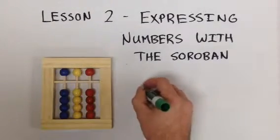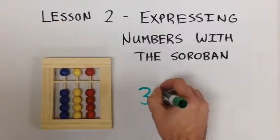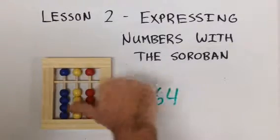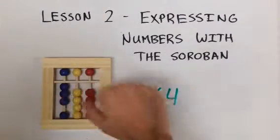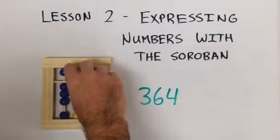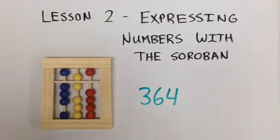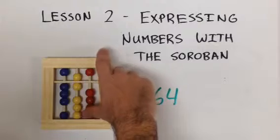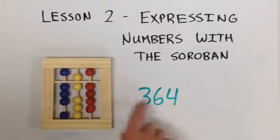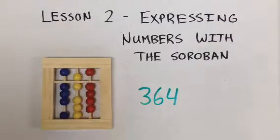Go ahead and do the number 364. With our thumb, move up three of the lower blue beads. Then move the upper yellow bead and one lower yellow bead together to the answer line. And four red beads to the answer line. This expresses the number 364.